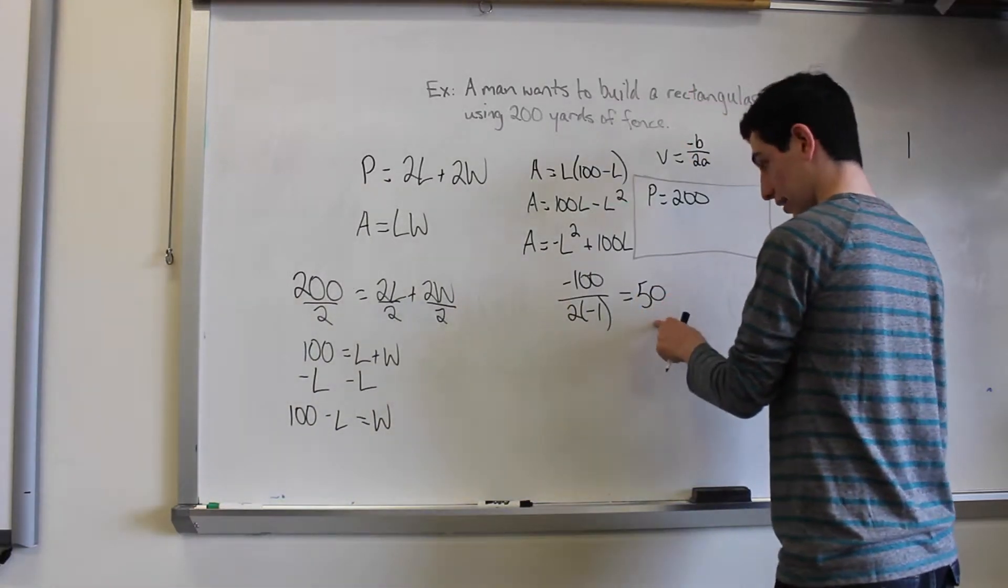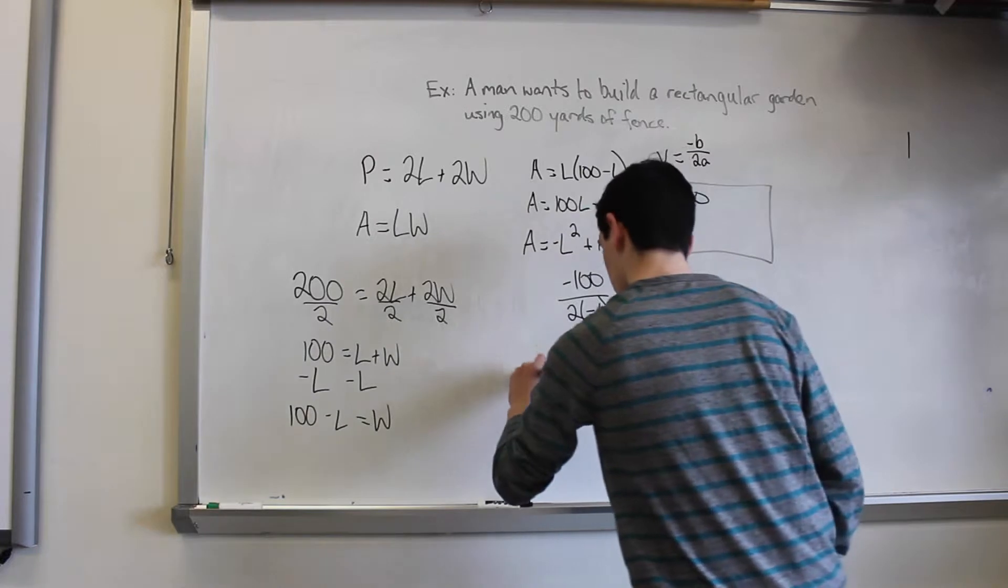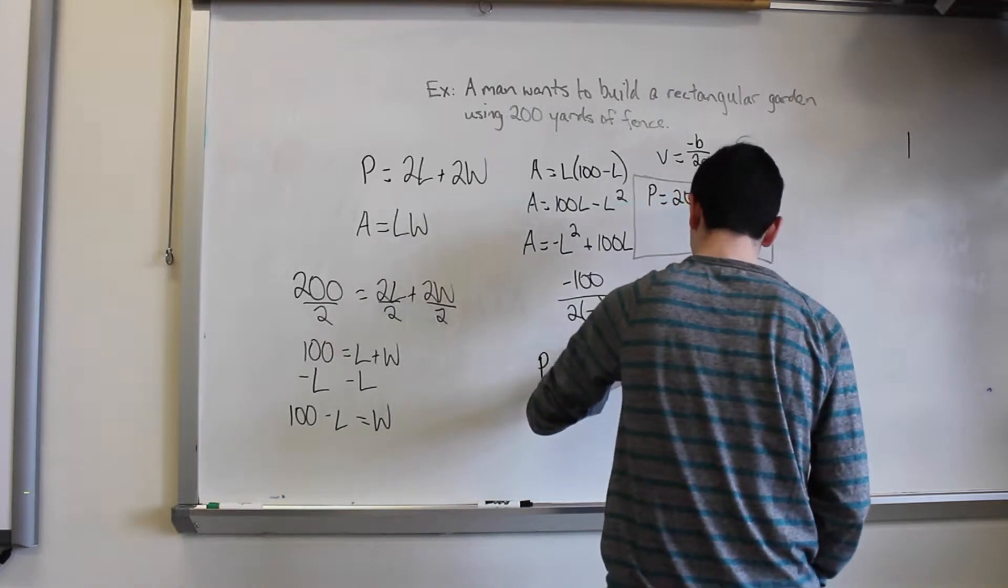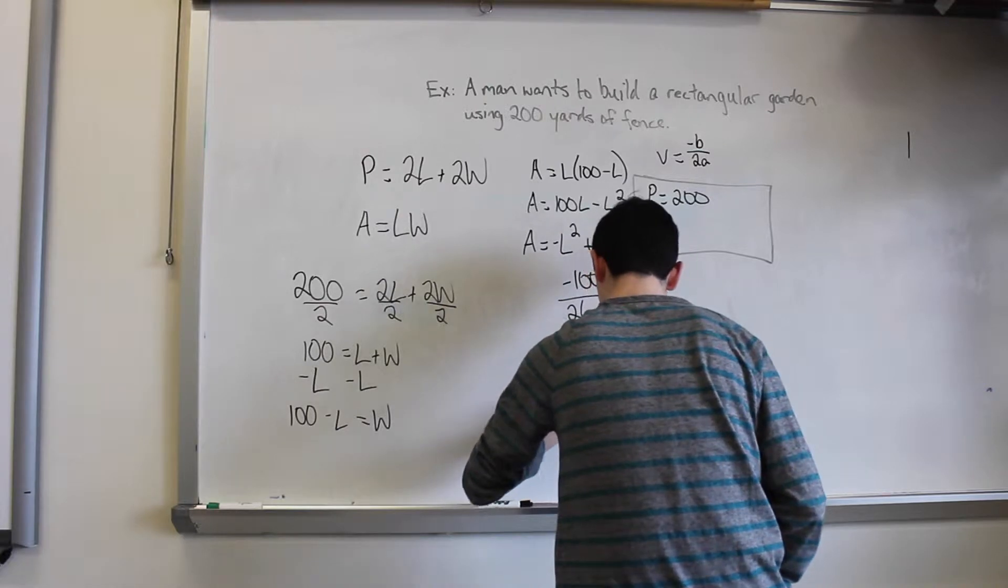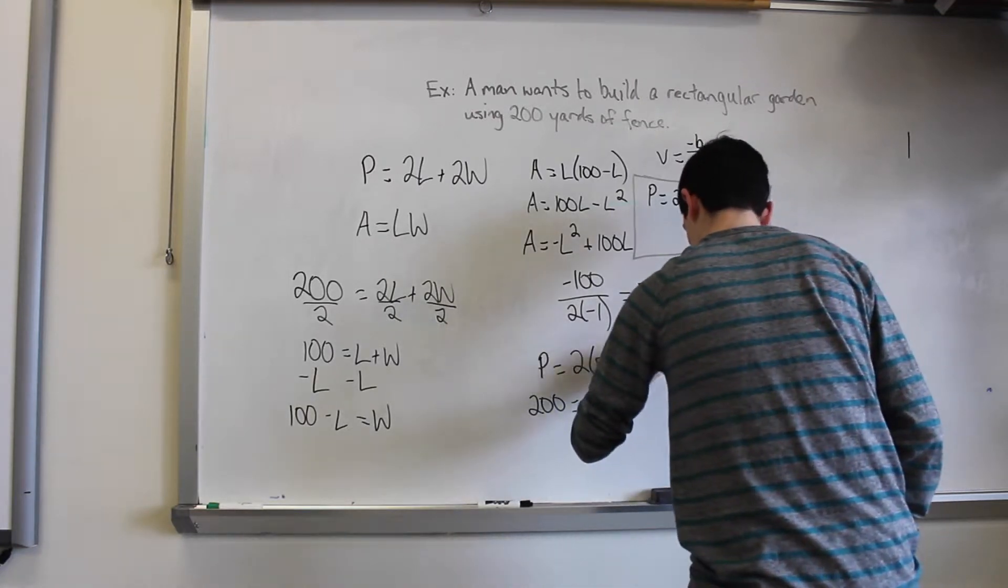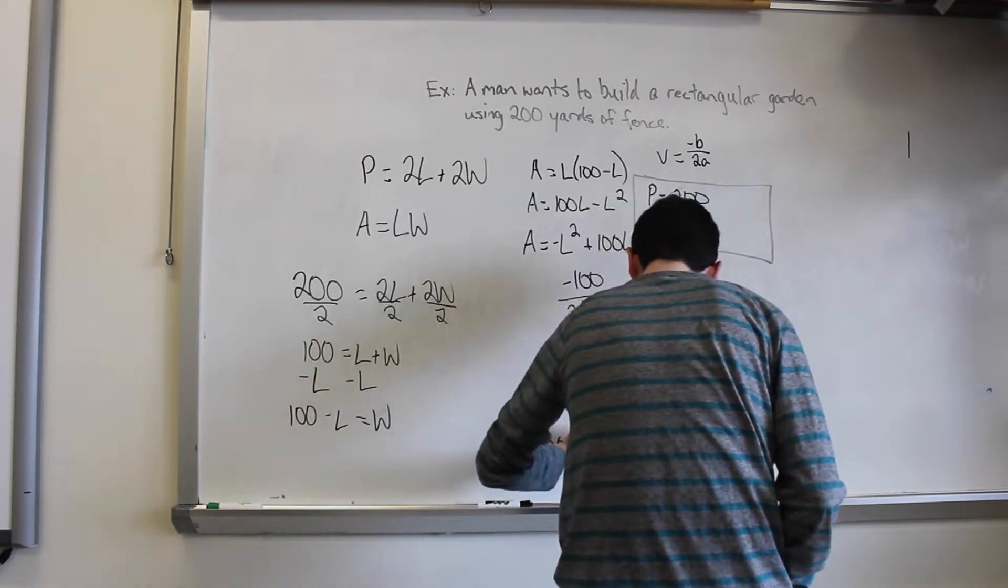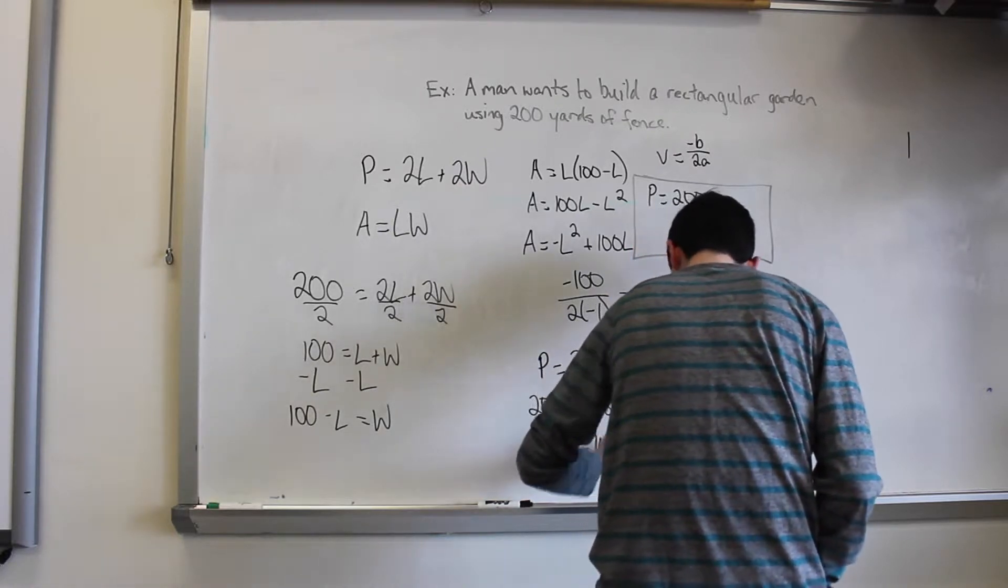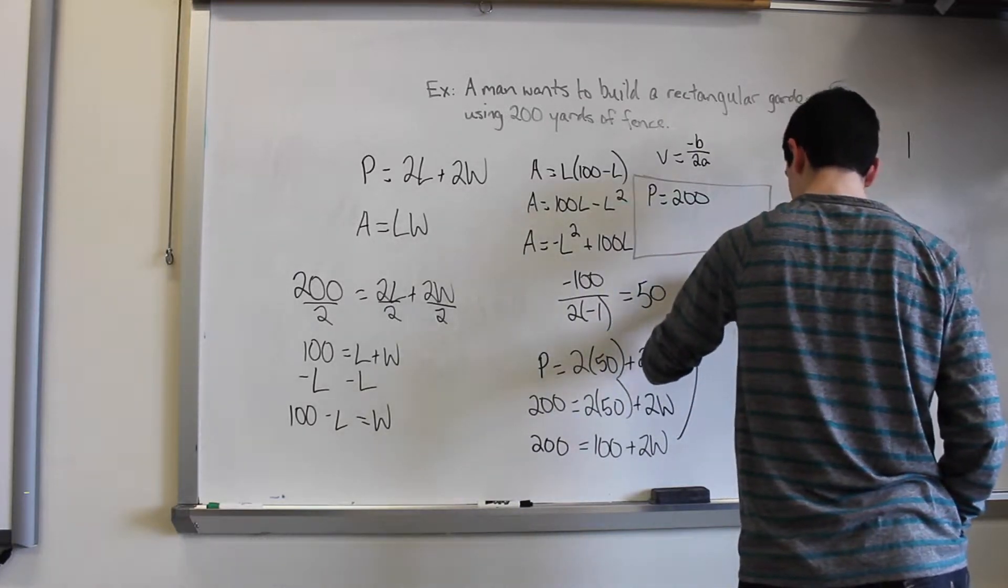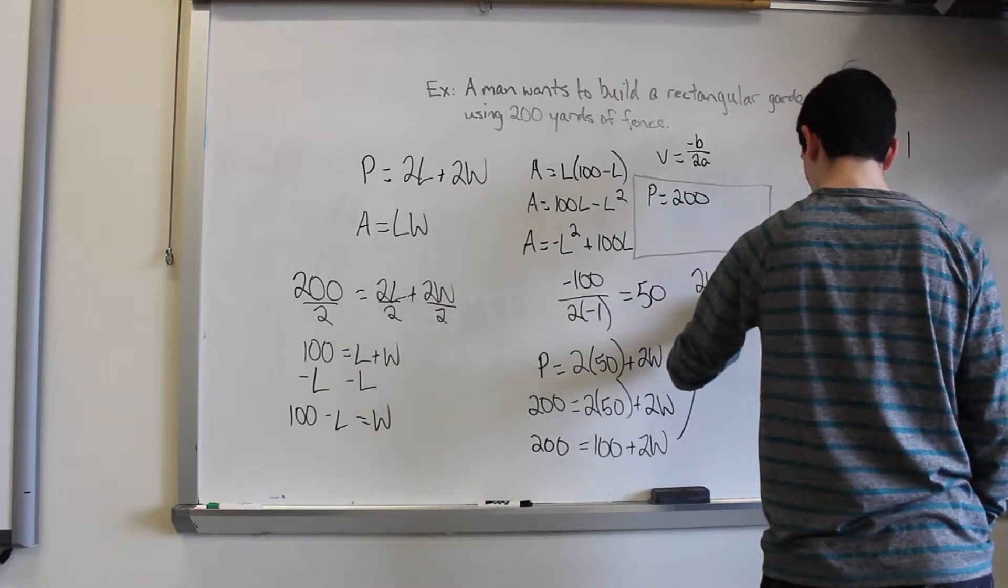Now we know that that is our length. So if we put that back into the perimeter, then we know that perimeter equals 2 times 50 plus 2 times width. So we have 200 equals 100 plus 2W. 2W equals 100 after subtracting 100 from both sides. And W equals 50.